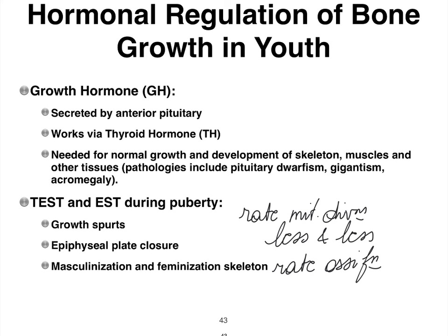That's when we talk about the closure of the epiphyseal plate, or the closing of the growth plate as we say in layman's terms. At the same time, testosterone and estrogen are also going to start shaping our skeleton so that, as a skeleton, we can be identified as either female or male. Prior to this process of masculinization and feminization of the skeleton, a child's skeleton cannot easily be identified as being either male or female. We really need the help of testosterone and estrogen to shape our skeleton.